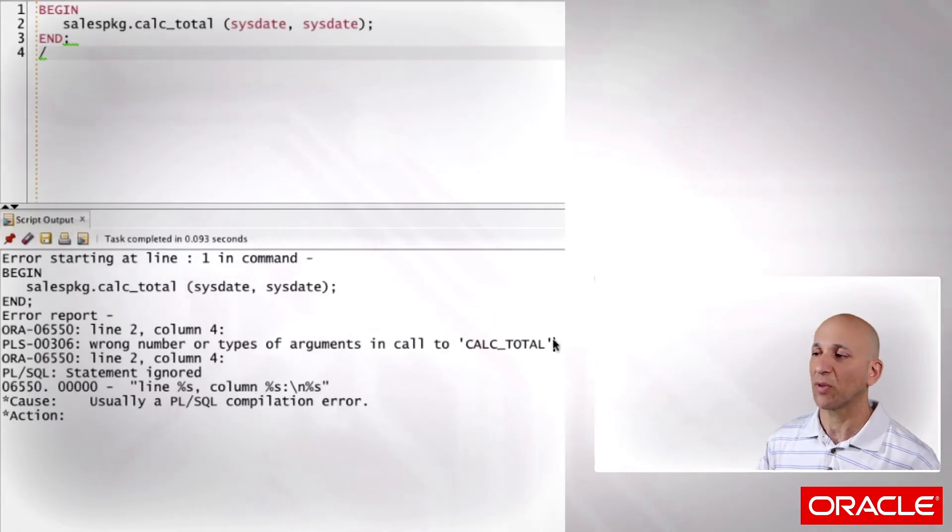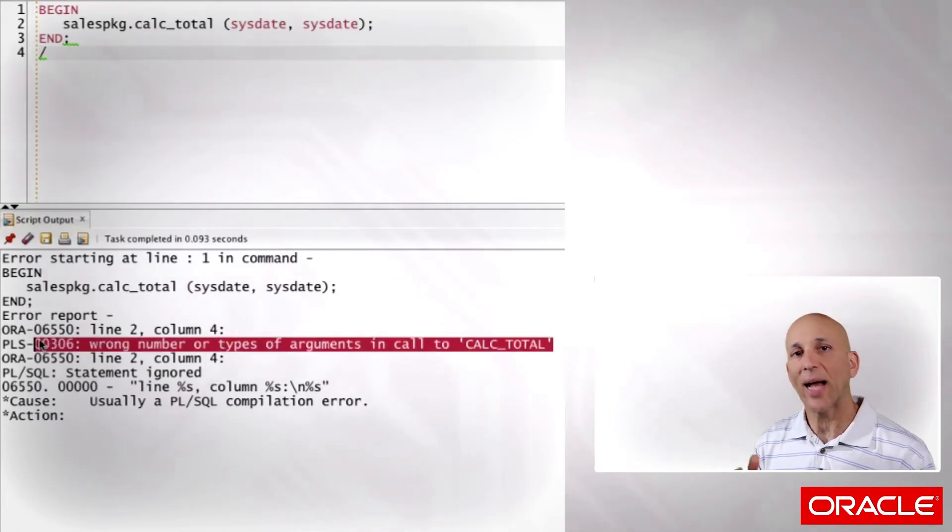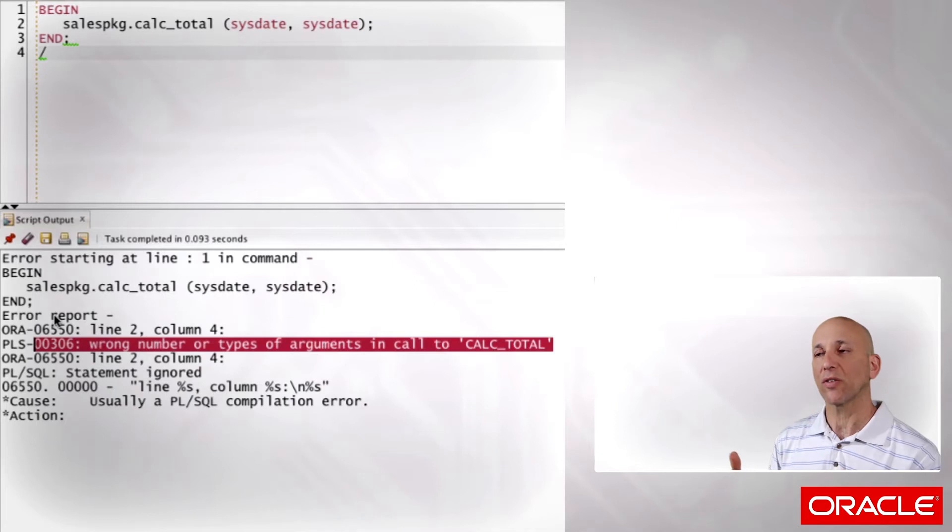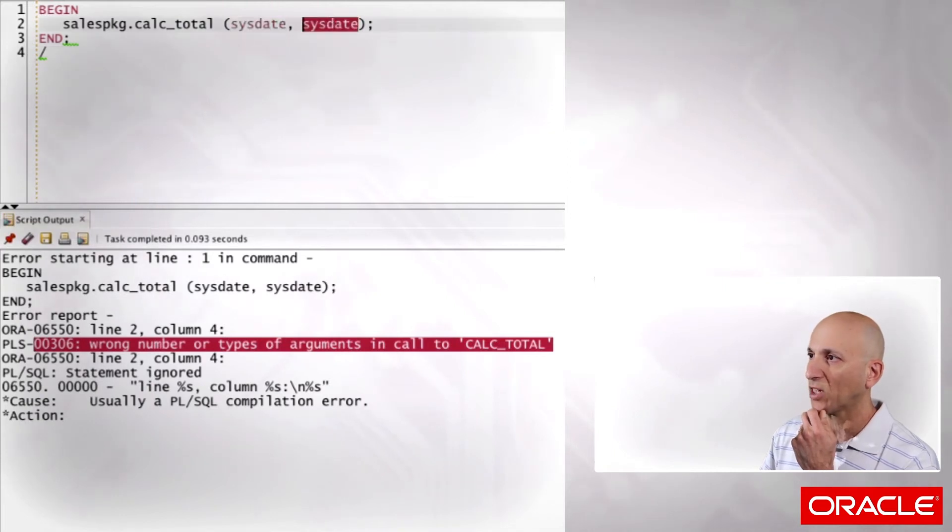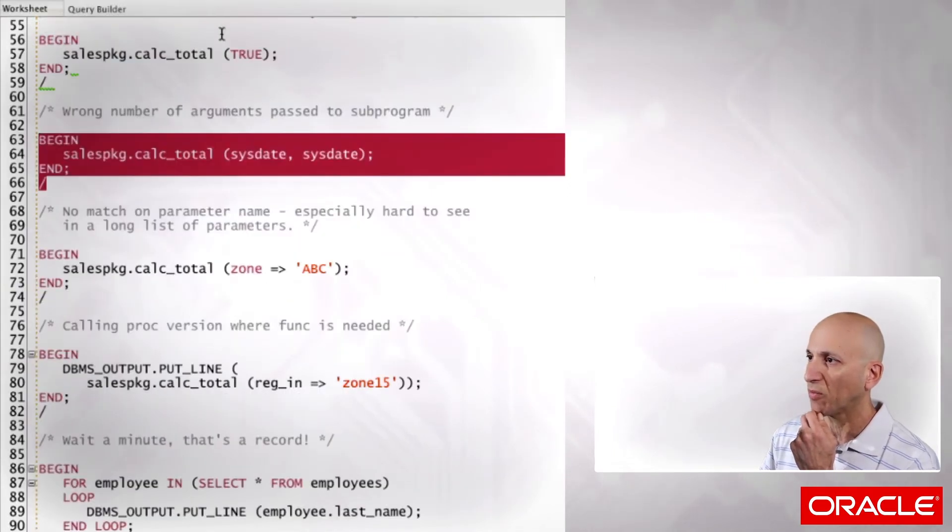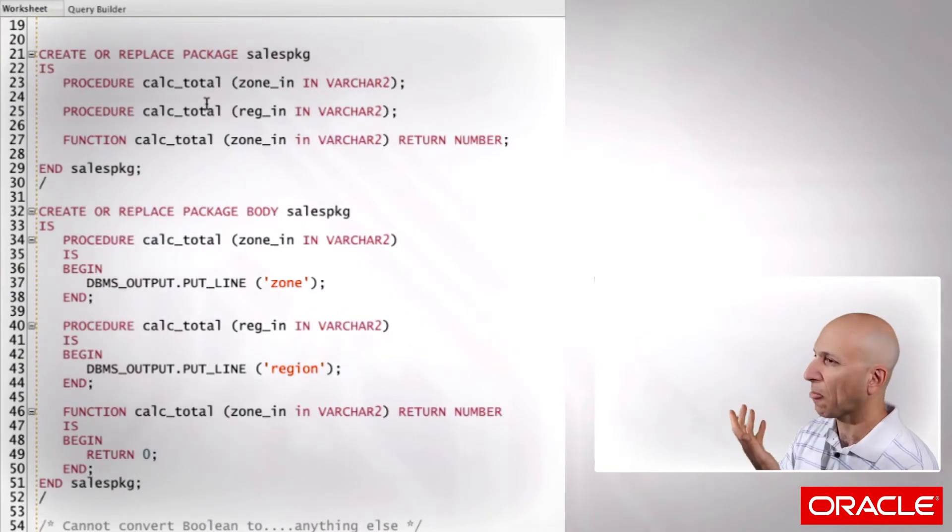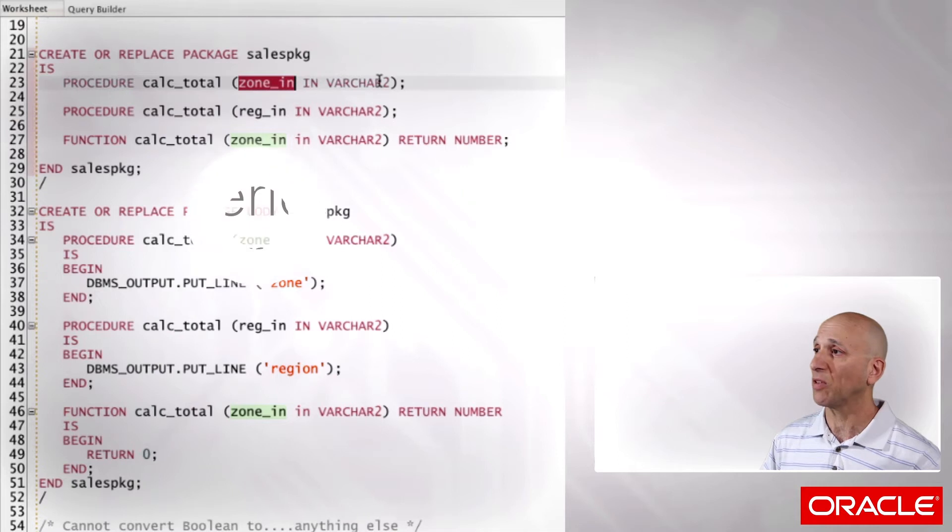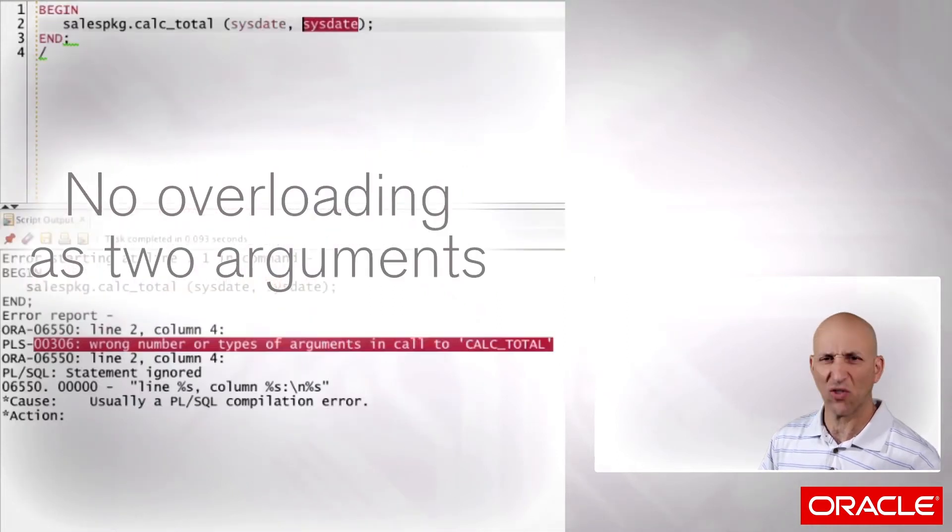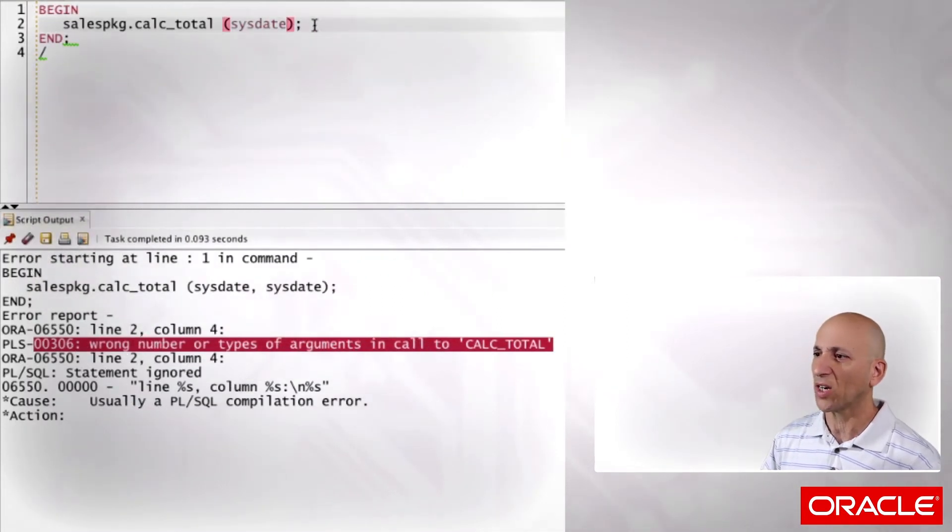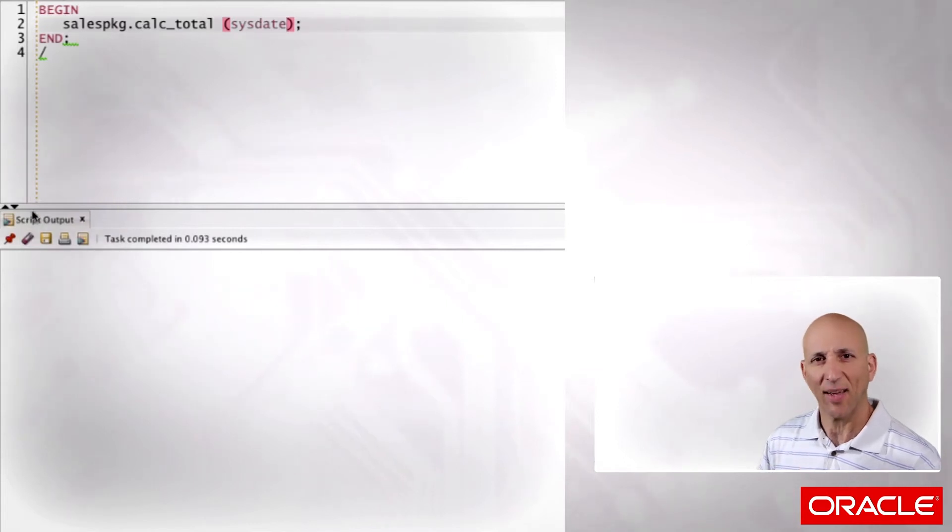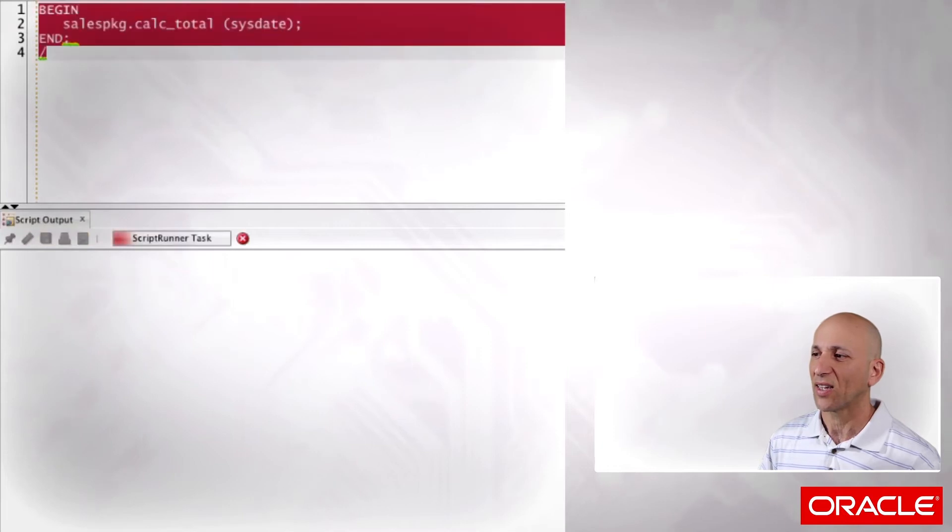And if I pass more than one parameter, so pass two dates, run my code. Wrong number or types of arguments in calctotal. As I mentioned before, for simple occurrences, what's the big deal? I look at my code. It says wrong number of types. I've got 1, 2. Go back to my original version of my code, the definition, and I look and I see 1, no 2. I can't have two arguments. So I'm going to go back and say it shouldn't be 2, it should just be 1.